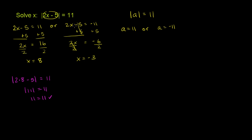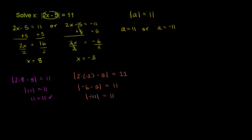Now let's try it with x is equal to negative 3. We get the absolute value of 2 times negative 3 minus 5 should be equal to 11. 2 times negative 3 is negative 6, minus 5. The absolute value of that should be equal to 11. Negative 6 minus 5 is negative 11. So the absolute value of negative 11 should be equal to 11. And it is — the absolute value of negative 11 is 11. So we get 11 is equal to 11. So they both work.